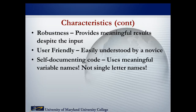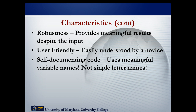User-friendly is very, very important. There are a lot of software companies that have made lots of money off applications that are user-friendly, where people can install it and immediately start using it without having to read volumes of information. Self-documenting code is something I've talked about since week two when we first started discussing variables. Those variable names are in themselves self-documenting. As you create your variable names, the name itself will document what that variable is going to be doing. This means using meaningful variable names and not using single-letter variables.